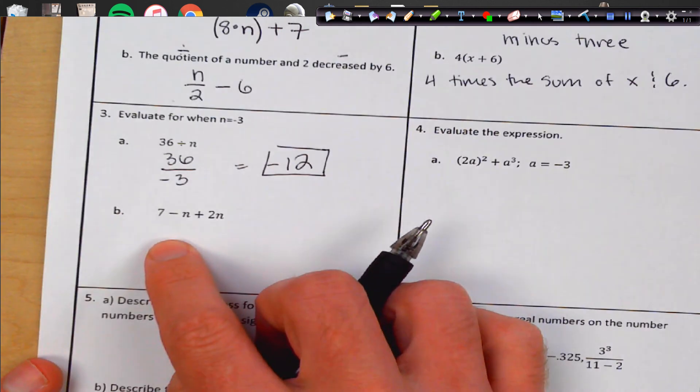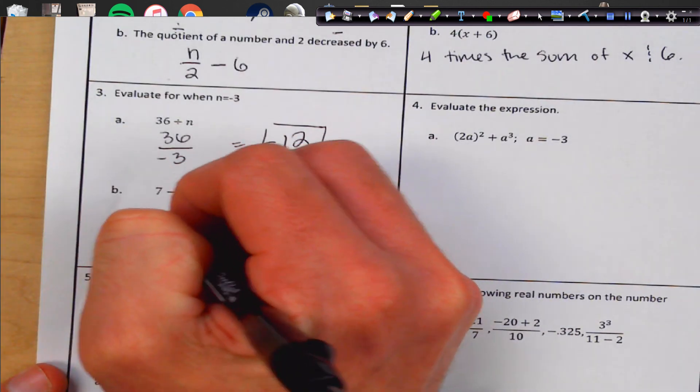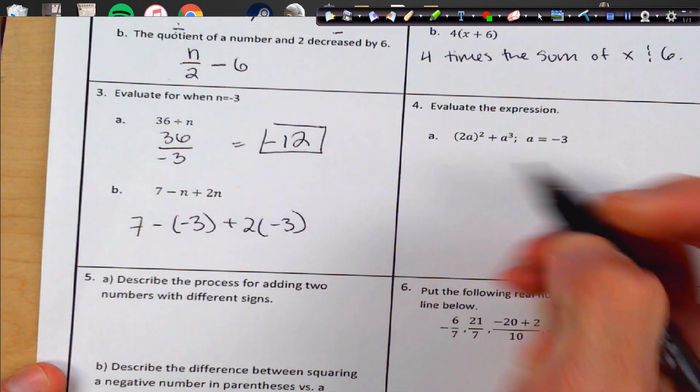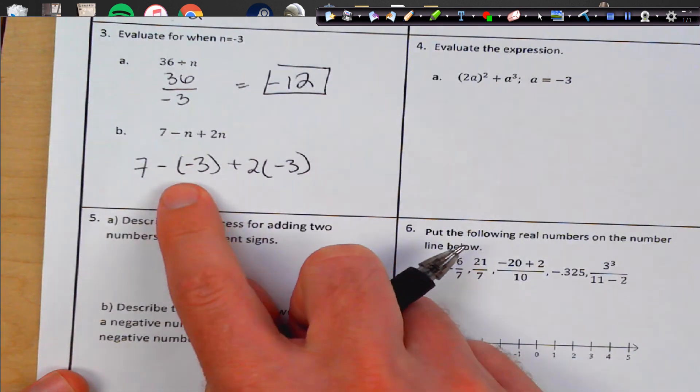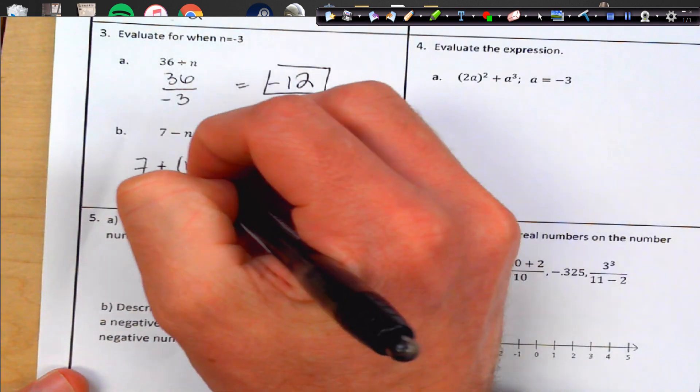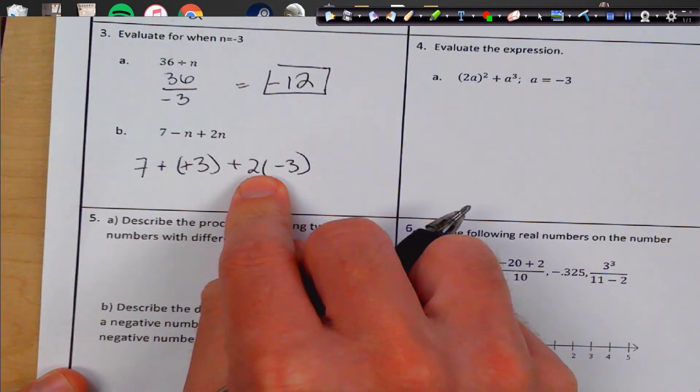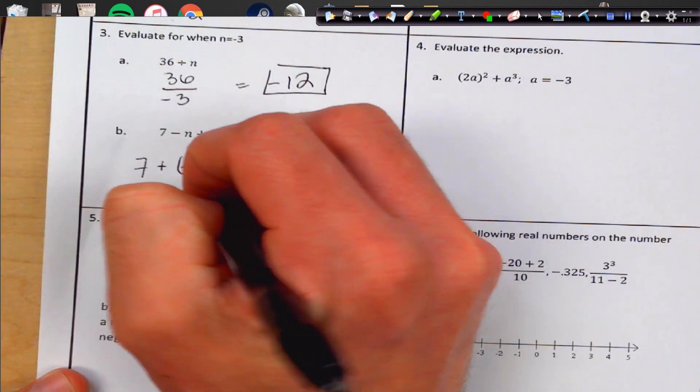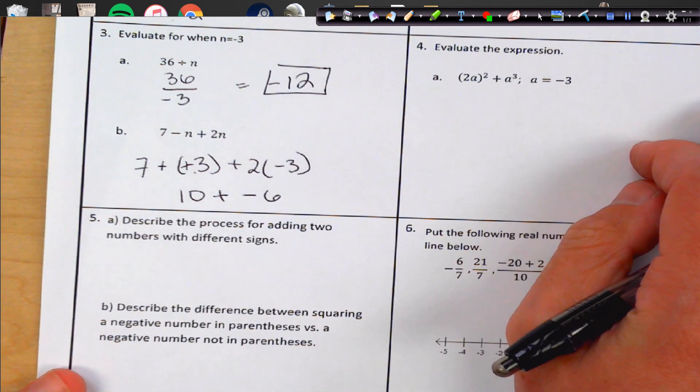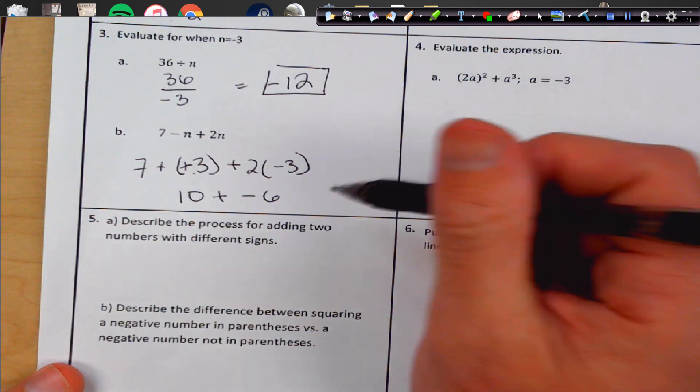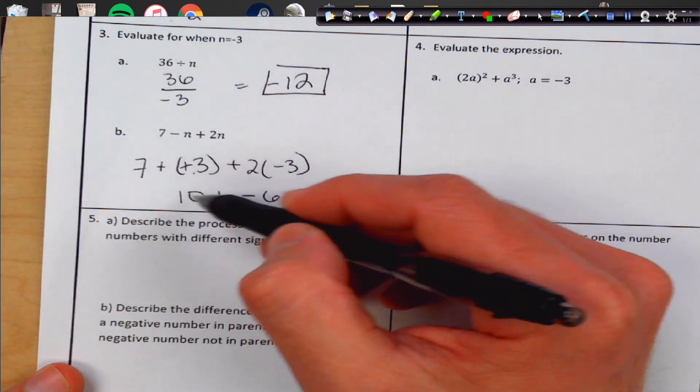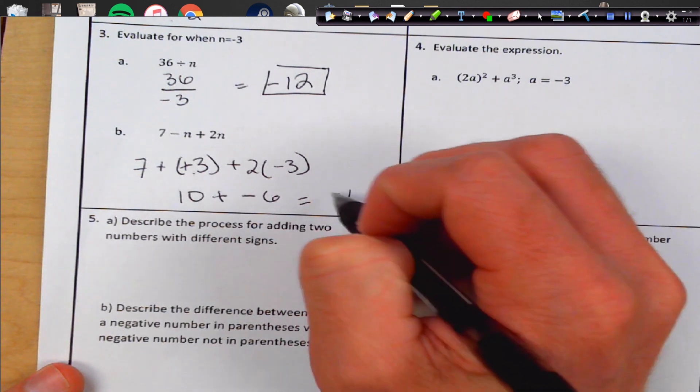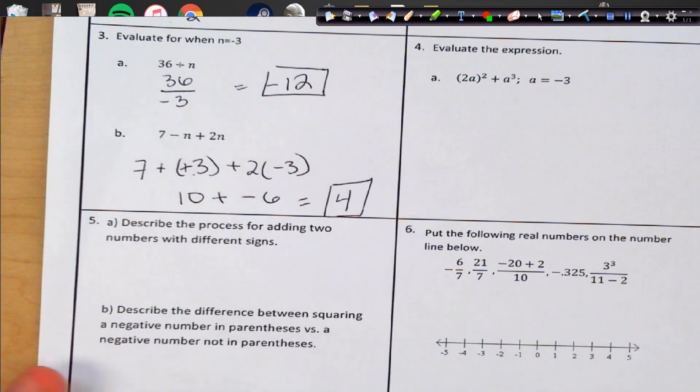Down here we're going to plug in. Whenever we plug in, we're going to use parentheses, especially since this 3 is negative. And we're going to see two negatives make a positive. And over here, two times a negative 3 is a negative 6. And 7 and 3 is 10. So 10 plus a negative 6, so this is going to give me a positive, negative. So we're going to get smaller, so it'll be 4. And it's a positive 4.